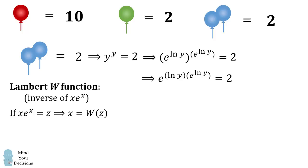We can now take the natural log of both sides so that we get the natural log of Y times the quantity E to the power of ln Y is equal to the natural log of 2. So now notice a pattern in this equation. If we let A be equal to the natural log of Y, we have A times E to the power of A equal to the natural log of 2. So we can use the Lambert W function here to solve for A. We have that A is equal to W of the natural log of 2.